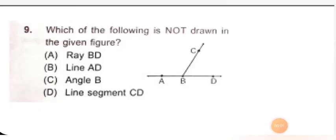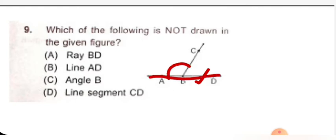Next question: which of the following is not drawn in the given figure? Ray BD is available. Line AD is also available. Angle B is this one. Line segment CD is absent — this line is absent. So which option is correct? Option D is correct.